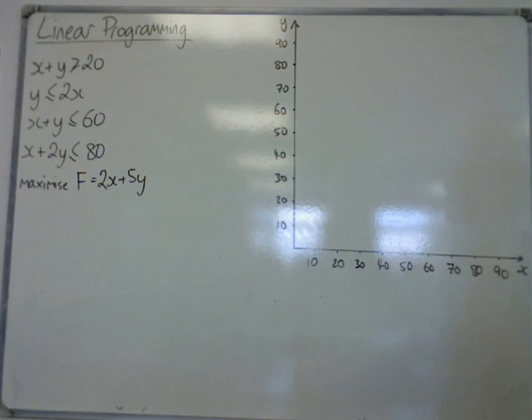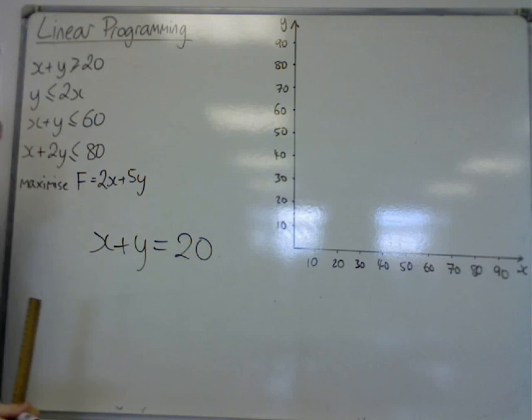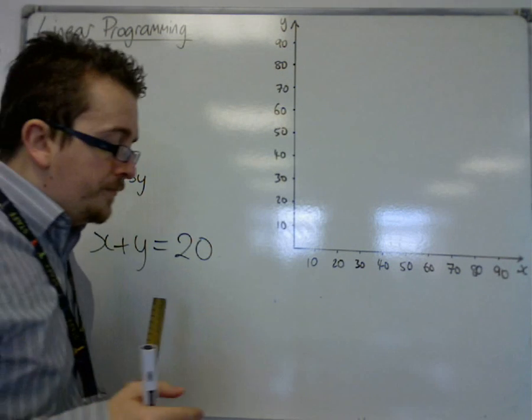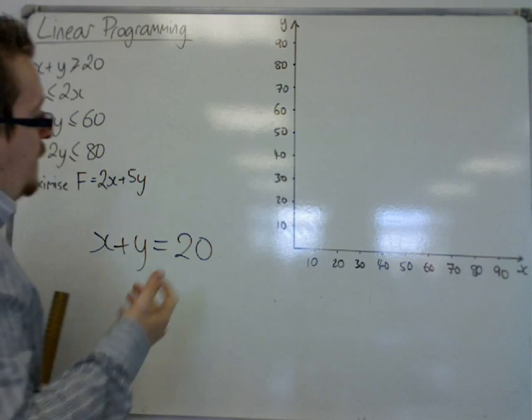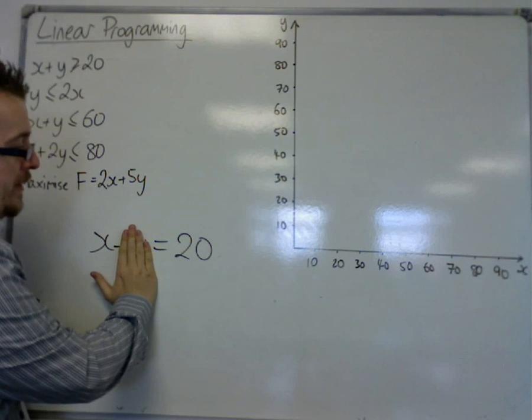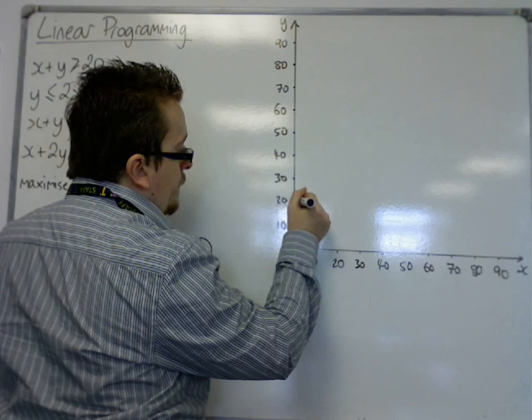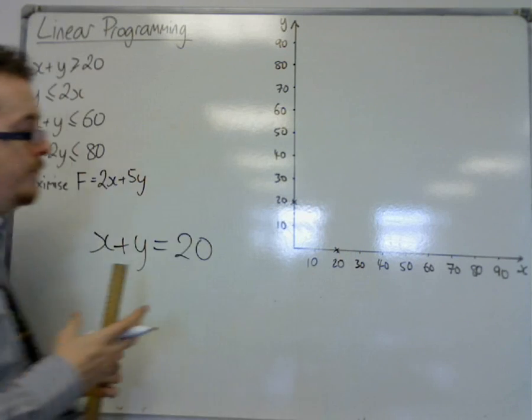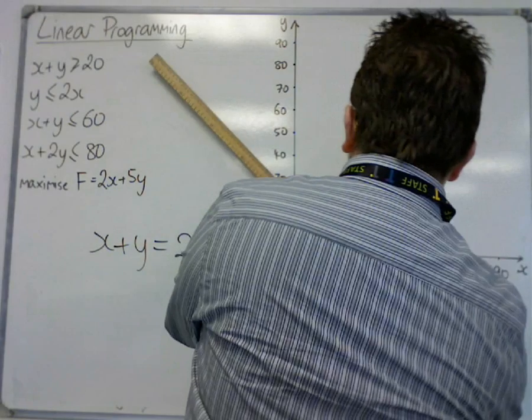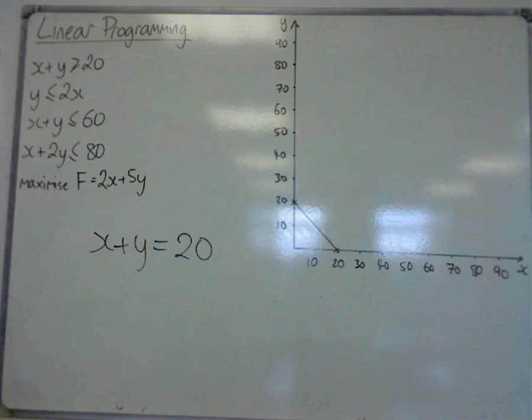So we're going to start with the top one. This x plus y is greater than or equal to 20. Now, whenever I'm thinking of this, just think of it as x plus y equals 20. Don't worry about that inequality sign to start off with. Just think about plotting this line. So what we'll be doing is we first think about, well, when x is 0, y is 20. And when y is 0, x is 20. Okay, so that would mean that it would go through 0, 20 and 20, 0. Okay, so we can draw that line on first. Okay, so there is the line x plus y equals 20.